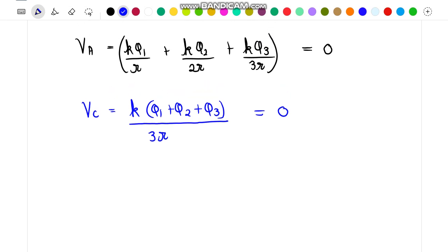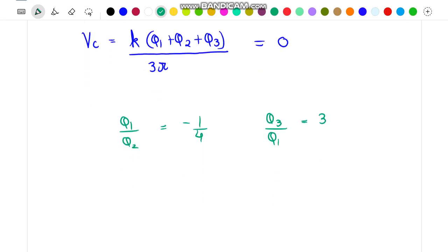From these two relations, when we manipulate or derive the ratios of Q1 and Q2, Q2 and Q3 from these two equations, we get the ratio of Q1 to Q2 to be equal to minus 1 by 4, Q3 to Q1 to be equal to 3, and the ratio of Q3 by Q2 comes out to be equal to minus 3 by 4.